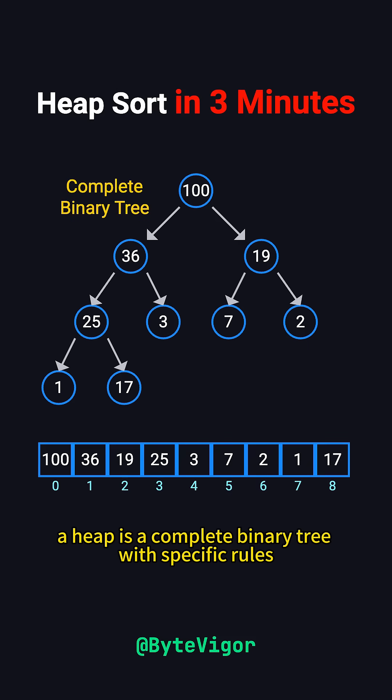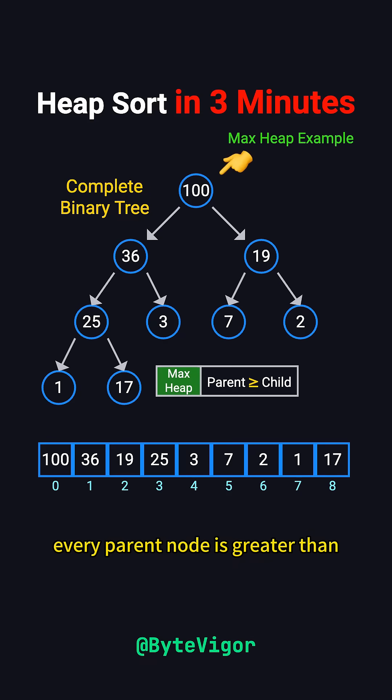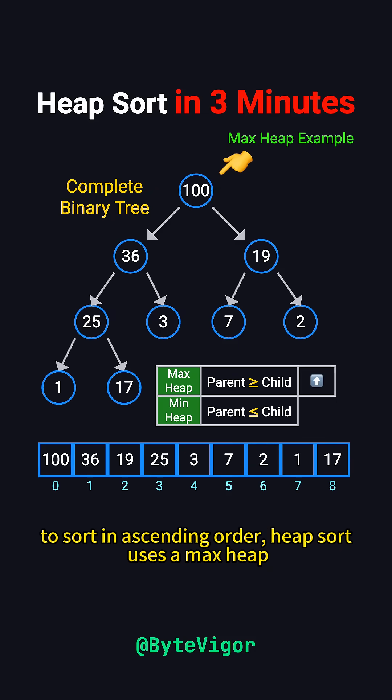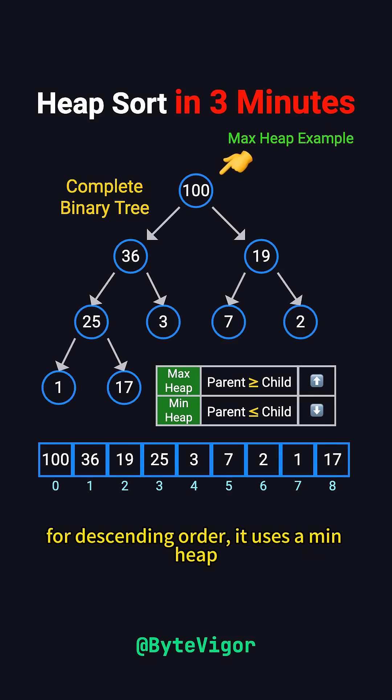A heap is a complete binary tree with specific rules. In a max heap, every parent node is greater than or equal to its children, while in a min heap, every parent node is smaller. To sort in ascending order, Heapsort uses a max heap. For descending order, it uses a min heap. Let's break it down and see how it works.